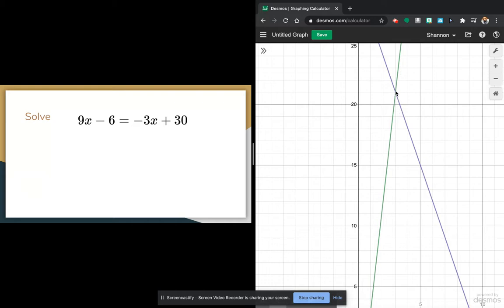Notice they are crossing right here. You click on that point, and you can see that your x value is 3. So when x equals 3, both these functions will equal 21. We're only interested in the x, so the answer here is x equals 3.